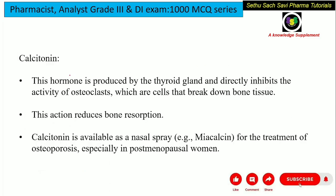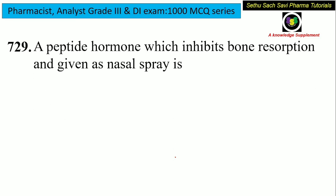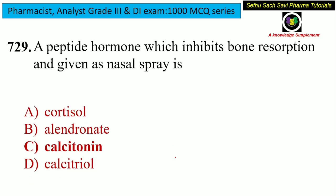The answer is calcitonin. Calcitonin is produced by the parafollicular cells of the thyroid gland. It can directly inhibit osteoclasts because its role is to regulate blood calcium levels. It is available as a nasal spray with the brand name Miacalcin, and is mainly used for the treatment of osteoporosis, particularly in post-menopausal women. So the answer is calcitonin.